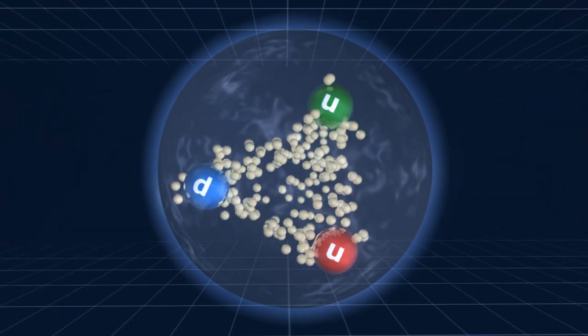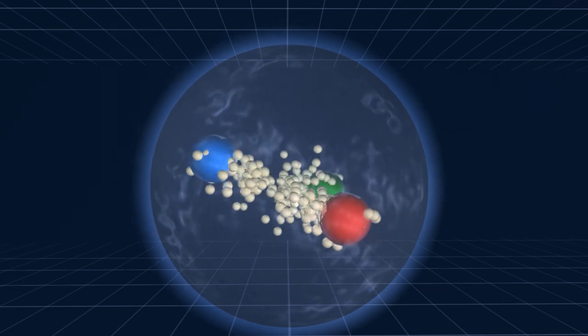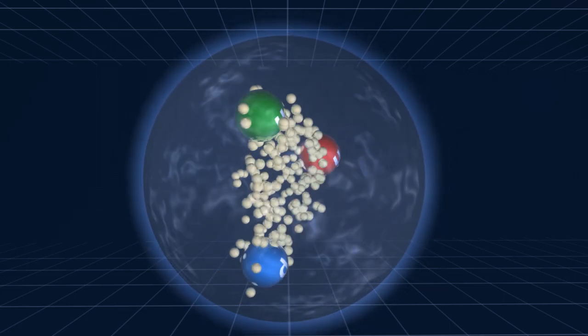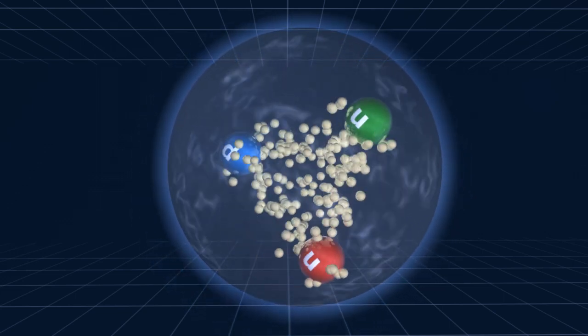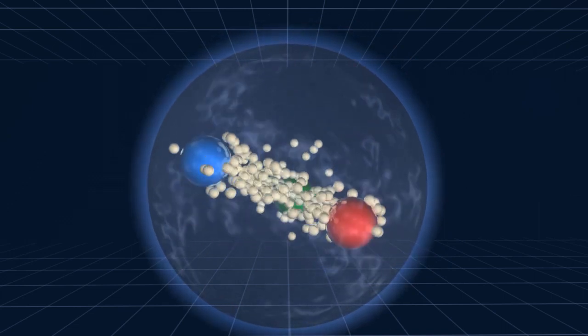Let's zoom in on one of the protons. It is composed of three quarks, two up quarks and one down quark, moving around very close to each other.